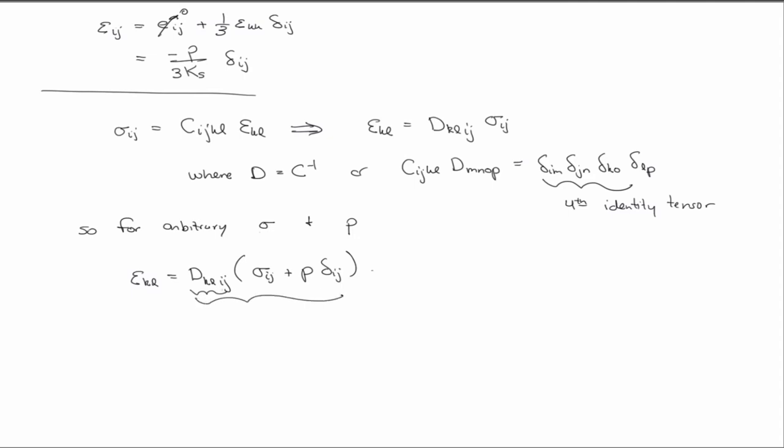This whole expression is the strain associated with stresses and fluid pressures in the drained material, but it's equilibrated in the solid skeleton by those volumetric strains we derived earlier — minus p over (3Ks) δij. So we have to subtract out those solid skeleton strains. The total strain of the fluid-filled structure is the strain from the stresses and fluid pressures, minus the internal strains to the solid skeleton.